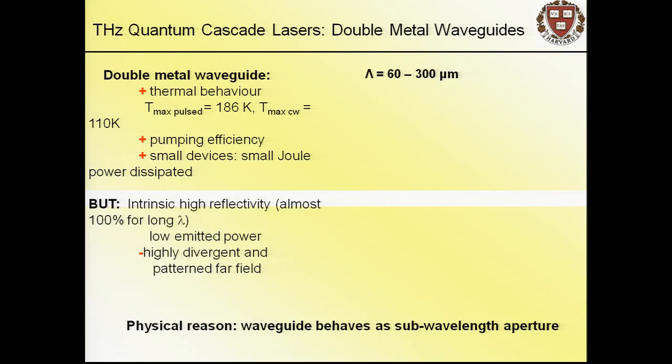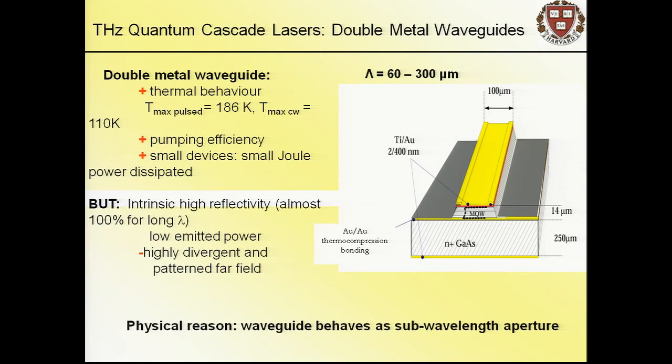I've told you about using metamaterial concepts to engineer the surface wave, the dispersion curve of polaritons on a surface. For quantum cascade lasers at terahertz frequency—really long wavelengths, 60 to 300 microns—the waveguide used for highest operating temperature is a double metal waveguide where you squeeze the active region between two metal regions. The problem is this becomes a sub-wavelength aperture with huge diffraction. We wanted to explore plasmonic metamaterial concepts to solve the divergence problem of these lasers.